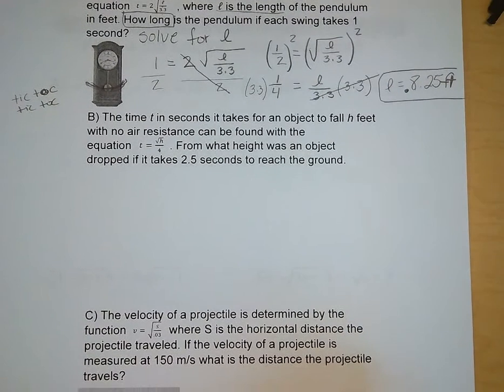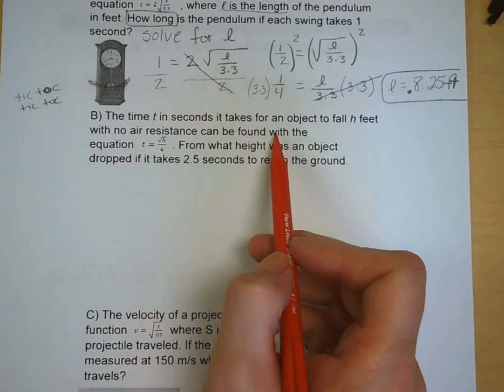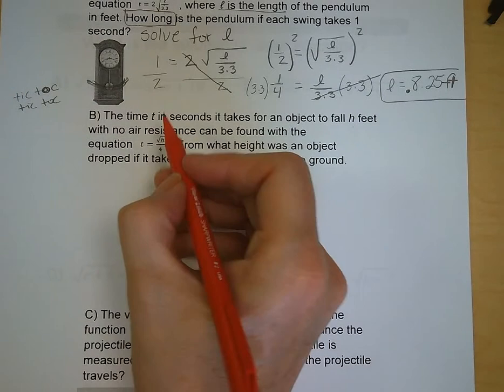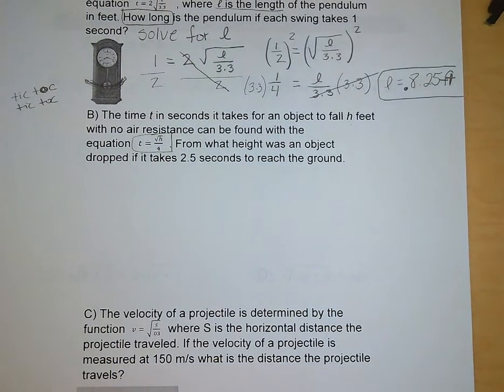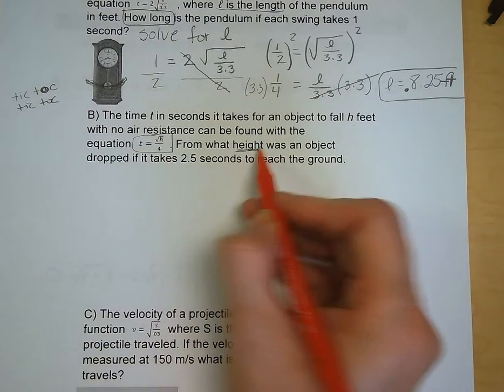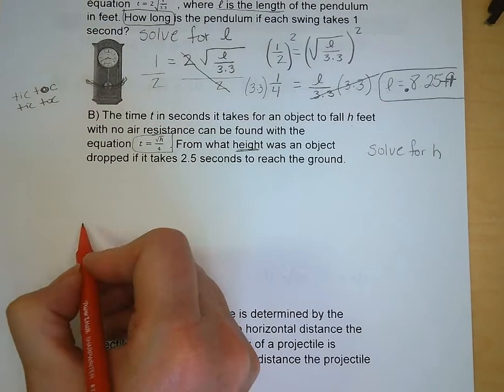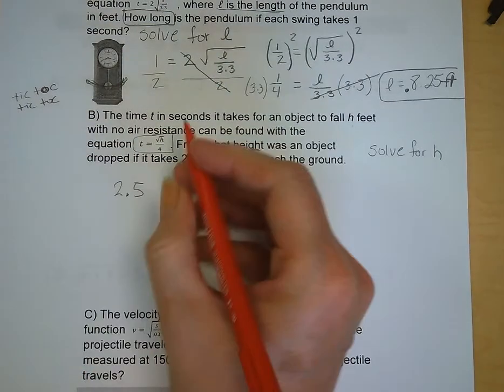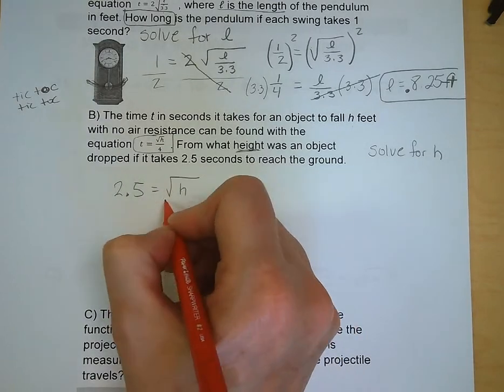Letter B. The time T in seconds it takes for an object to fall H feet with no air resistance can be found using the equation T is equal to the square root of H over 4. From what height was an object dropped if it takes 2.5 seconds to reach the ground? So we are trying to find the height or H and we know that it takes 2.5 seconds so we plug that in for T. And that is equal to the square root of H over 4.